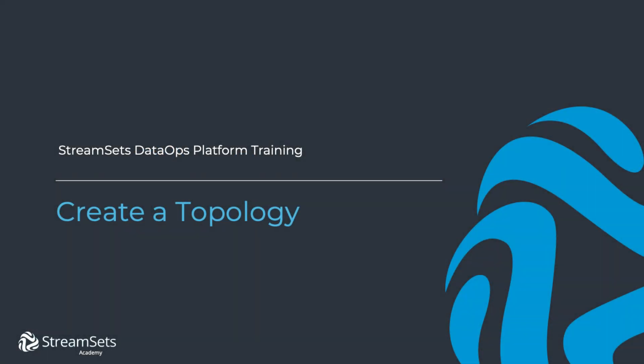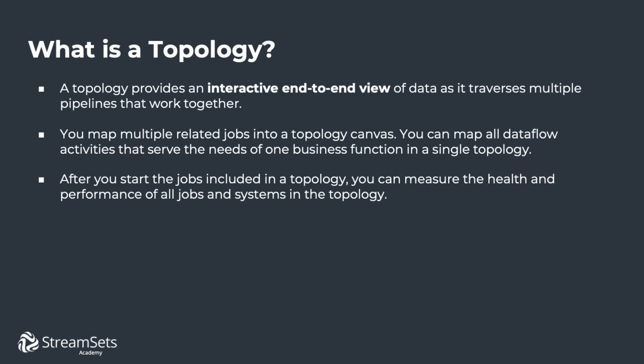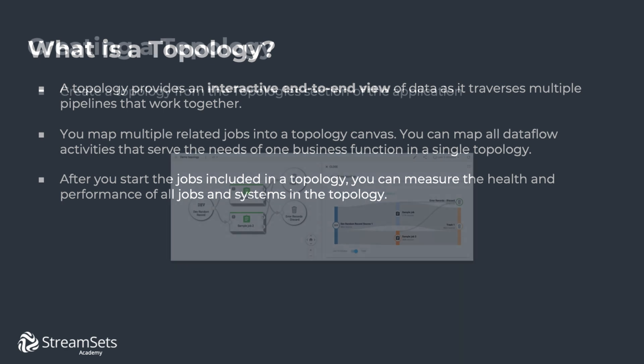In this lesson, we're going to learn how to create topologies. The topology provides an interactive end-to-end view of data as it traverses multiple pipelines that work together. You map multiple related jobs into a topology canvas. You can map all data flow activities that serve the needs of one business function in a single topology. After you start the jobs included in a topology, you can measure the health and performance of all jobs and systems in the topology.